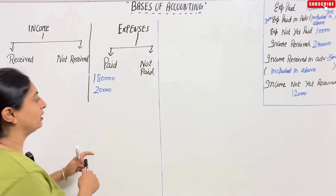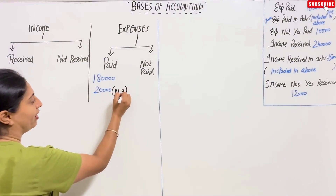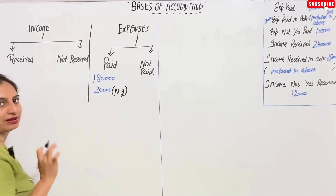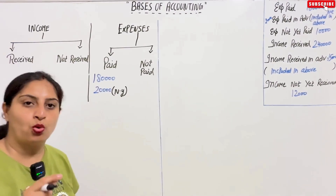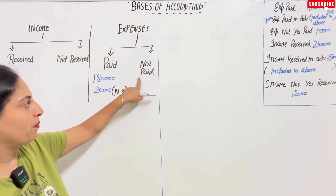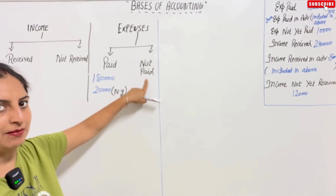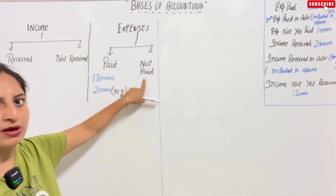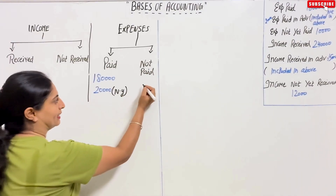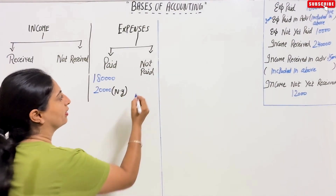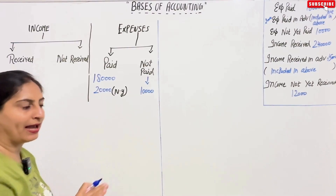Next is expenses not yet paid, which means outstanding — not paid. How much is outstanding? Ten thousand. So ten thousand comes under the 'not paid' column. This is our expenses section of the chart.